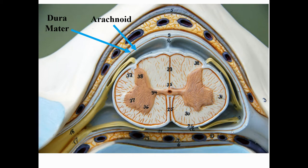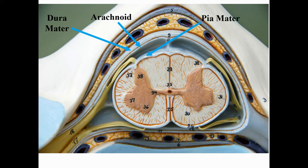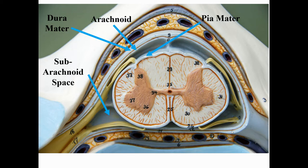Right next to the dura mater, with almost no space in between, is the second membrane called the arachnoid. There's a line drawn between them representing a space, but these two membranes are pushed right up against each other. The third membrane touches the spinal cord and is called the pia mater. You can see all three meninges here: the dura mater, the arachnoid, and the pia mater. The space between the arachnoid and pia mater is the subarachnoid space, which goes all the way around the spinal cord and contains cerebrospinal fluid.